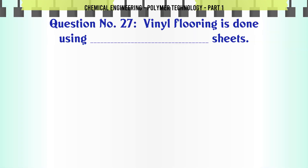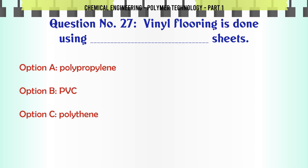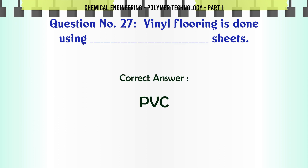Vinyl flooring is done using: A. Polypropylene, B. PVC, C. Polythene, D. Polyvinyl acetate. The correct answer is PVC.